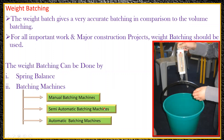In the semi-automatic batching machine, you have to do the feeding of coarse aggregate, fine aggregate, and similar materials. Once that is done, the machine itself will operate. You don't have to fill everything manually. You store the materials at the plant, and with the help of a button, whatever input you give — say you want 2.5 kg of cement — that amount will automatically flow through the particular bin.